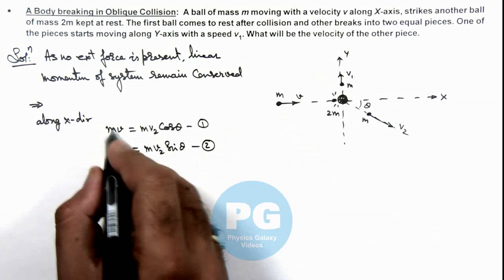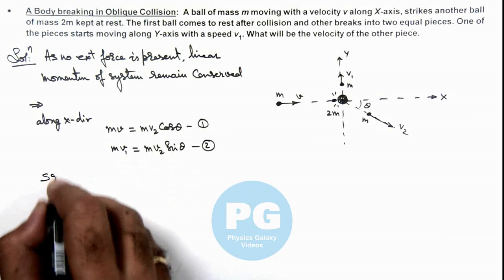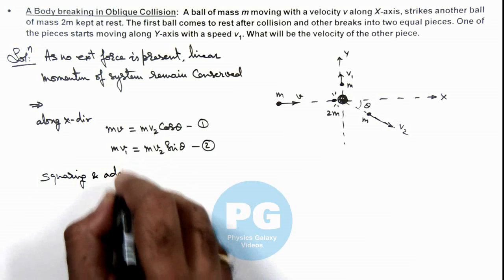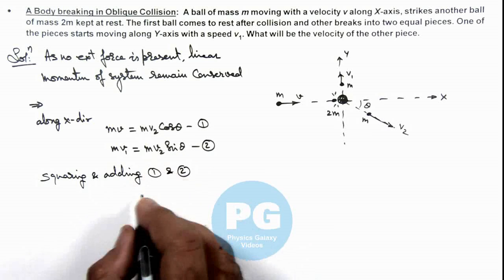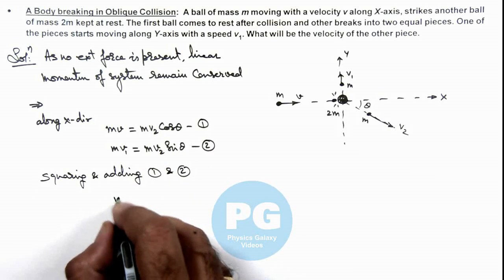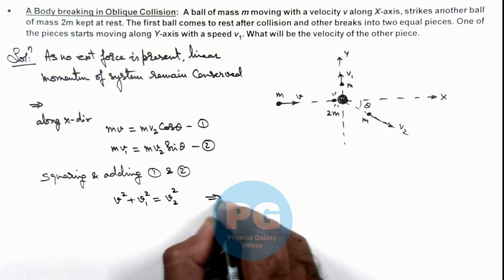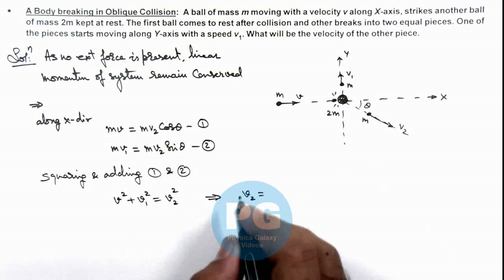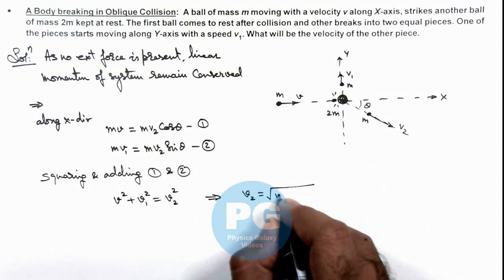Here m gets cancelled out from these equations. And we can write squaring and adding equations 1 and 2. Here you can see what we'll get: this gives us v squared plus v1 squared is equal to v2 squared, which gives us the velocity of the part which is going in other direction, which is root of v squared plus v1 squared.